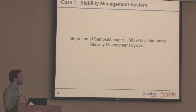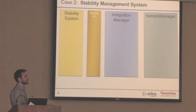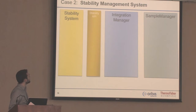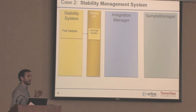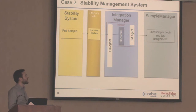The second case study involves a stability management system integrated with sample manager. The stability system had an API — an application programming interface — which enabled reading and writing of results. A sample would be pulled within the stability management system, the API would get these posts, and Integration Manager would pick up the proprietary XML format, transform it to its common format, and transfer it to the sample manager agent, which would log samples, jobs, and assign tests.